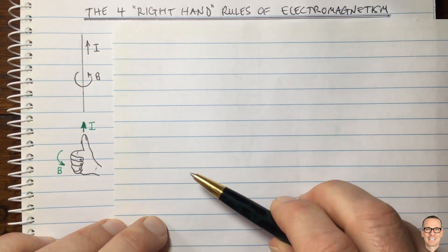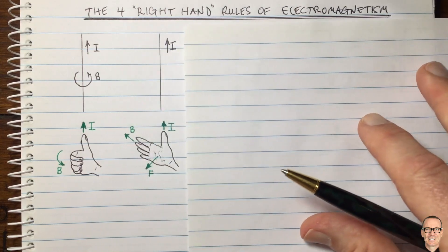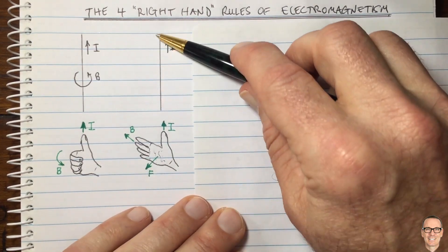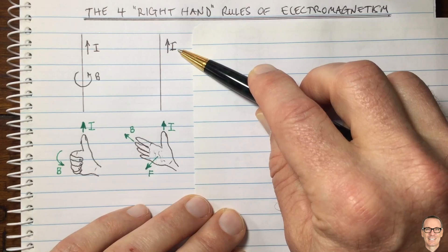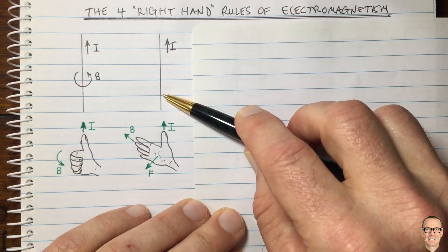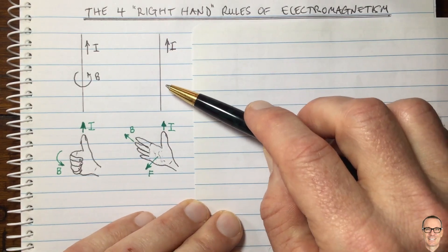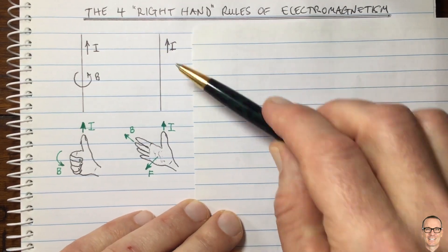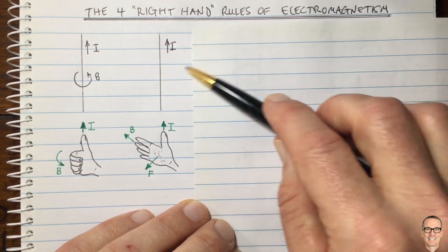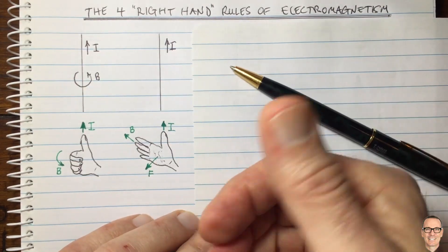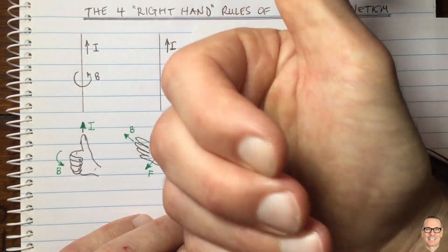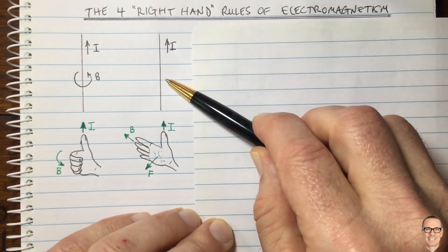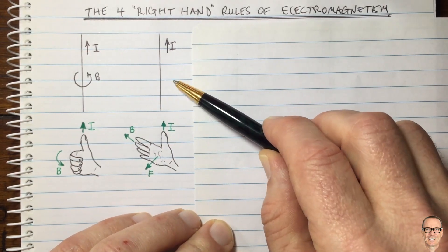The second rule also relates to a wire with a current in it, but this rule addresses what happens when you have another magnetic field acting on that wire. That wire will have its own field — just like the first rule — but now let's imagine there's an additional external magnetic field also acting on this wire.